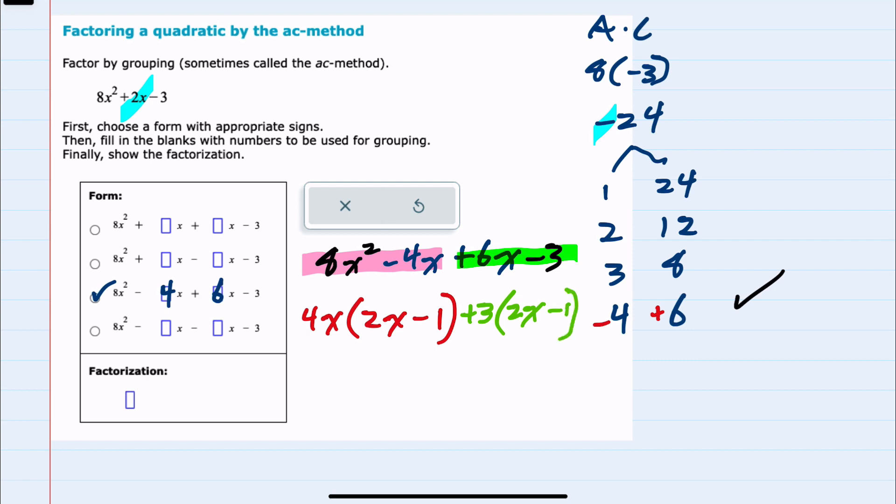So we've factored out the greatest common factor out of the first two, factored out the greatest common factor out of the second two, and now I can see that each one of these has a 2x minus 1, and I can factor out the 2x minus 1 from each one of those,